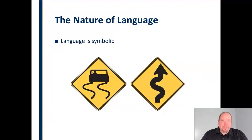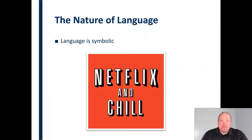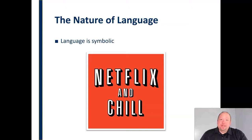This applies not just to words but to images as well. When we're driving, we see signs and we know what they mean — they represent something else, created by people to convey a different idea. Expressions work the same way. We say Netflix and chill, and even I know what that means — it doesn't mean you're going to watch Netflix and relax. It represents a different idea. So language is symbolic; it's representative of something else.